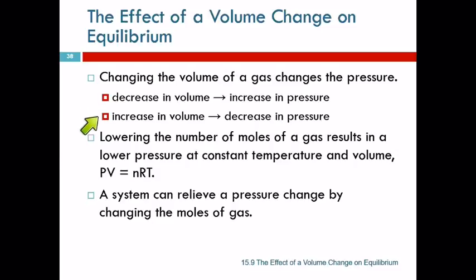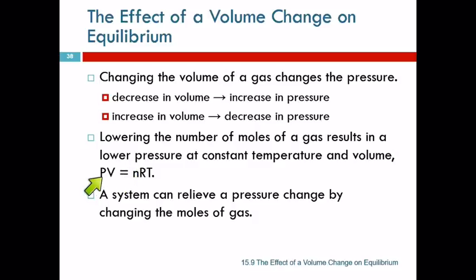When we lower the number of moles of gas, we get a lower pressure. PV = nRT: if we reduce n but the temperature and the volume stay the same, then the pressure must change — if n goes down, P has to go down. A pressure change is a disturbance on an equilibrium, and it will relieve that pressure change by shifting in a direction that changes the number of moles of gas.